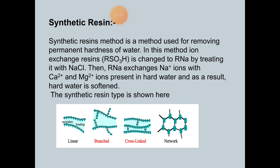The structural types of synthetic resins include: linear — with secondary bonding; branched — with two branches extending outward; cross-linked — structured like a railroad; and network types, as seen in the figure.